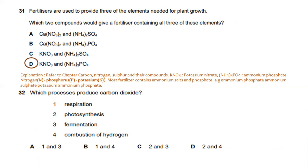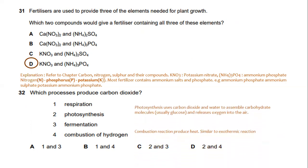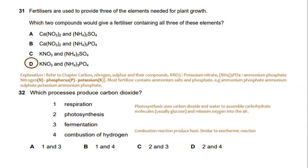Which process produces carbon dioxide? Respiration produces carbon dioxide. Photosynthesis uses carbon dioxide and water to assemble carbohydrate molecules and releases oxygen into the air. Combustion of hydrogen produces heat but not carbon dioxide, similar to an exothermic reaction. So the answer is 1 and 3, option A.